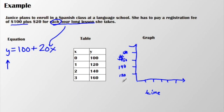At zero hours, I have $100. At one hour, my cost is $120. Two is $140. $160, and so on.